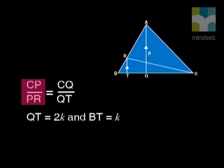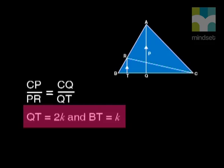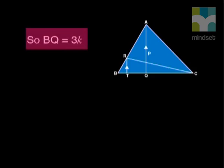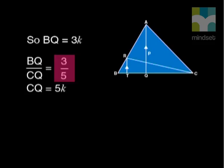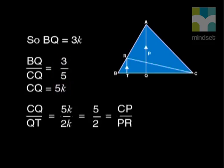To find the numerical value of this ratio, we can use any information that we calculated from the first question. BT equal to K and QT equal to 2K. That makes BQ equal to 3K. We know the ratio of BQ to CQ to be 3 to 5. That helps because that means CQ equals 5K. So, now we know that CQ to QT equals 5K to 2K, and that's also equal to CP to PR. So, we get CP divided by PR equals 5 divided by 2. And that answers the question.